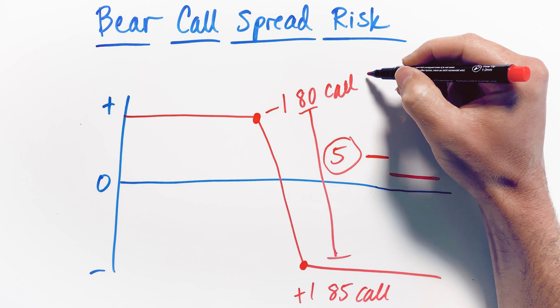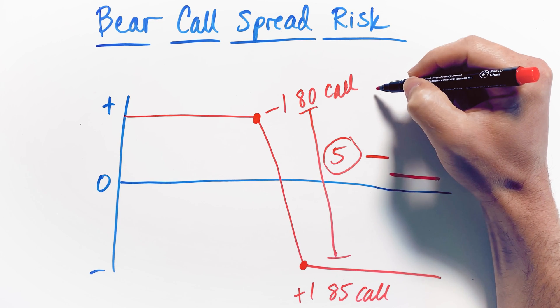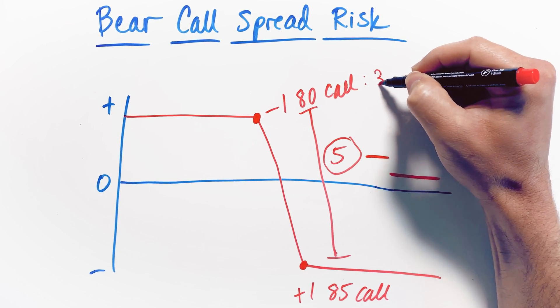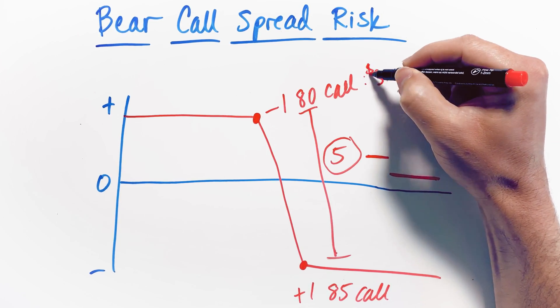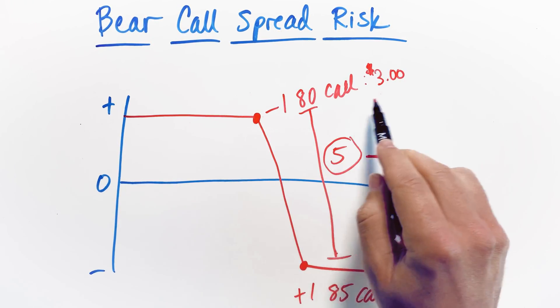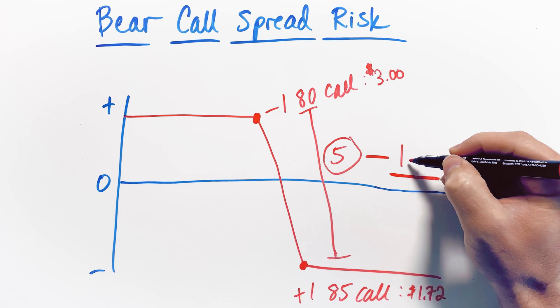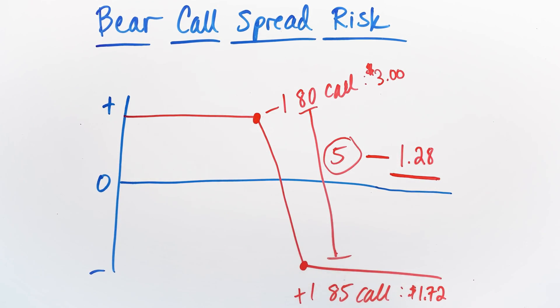So let's say, for example, that this particular short 80 call strike that we had sold, we sold for $3. So we collected a $3 credit just for this individual leg. The 85 strike call that we had to buy to complete this spread, we bought for $1.72. So now what we have to do is we have to figure out the net credit between these two contracts when we entered this position. This net credit in this case is $1.28 that we collected.